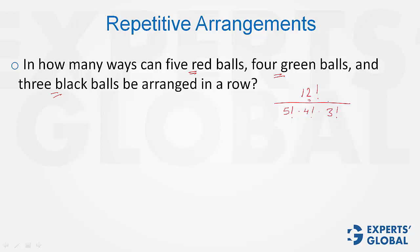So practically, the answer is 12 factorial upon 5 factorial, 4 factorial, 3 factorial.